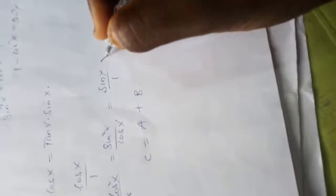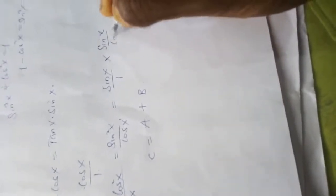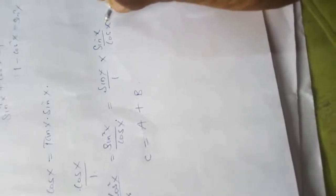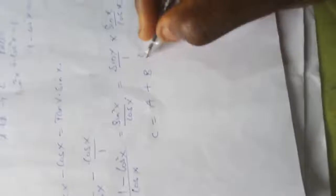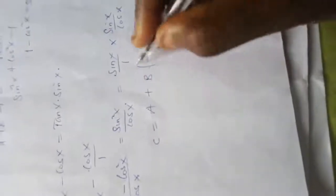So this is the same thing as, I can write this as sine x over 1 times sine x over cos x. And you know that sine x over cos x is tan x. So this is sine x into tan x. Has it not been proven? Has it not been proven that this is equivalent to this? So this is the last problem for tonight.